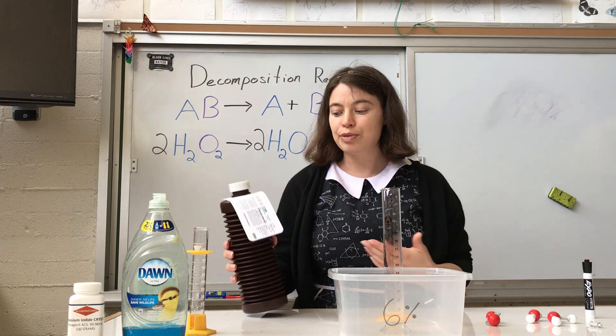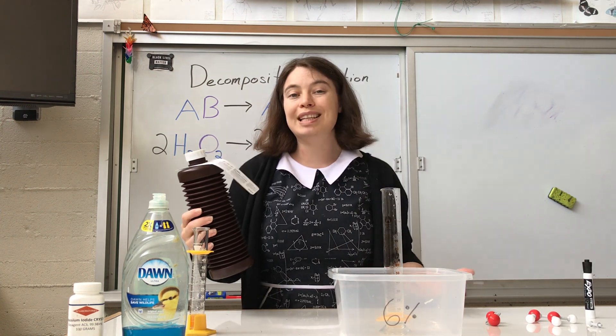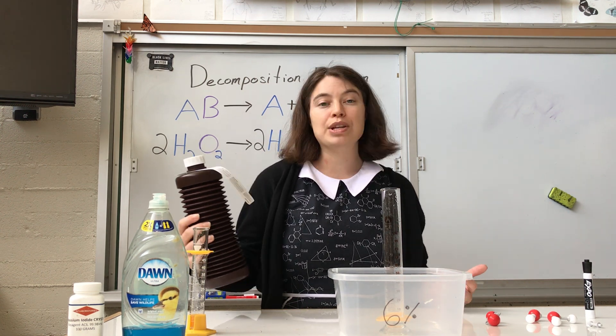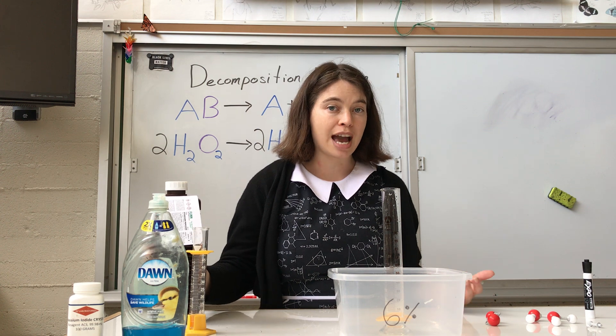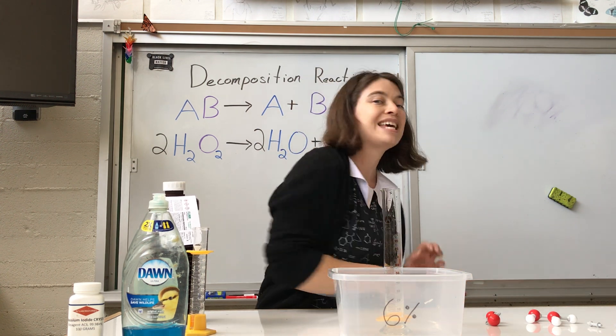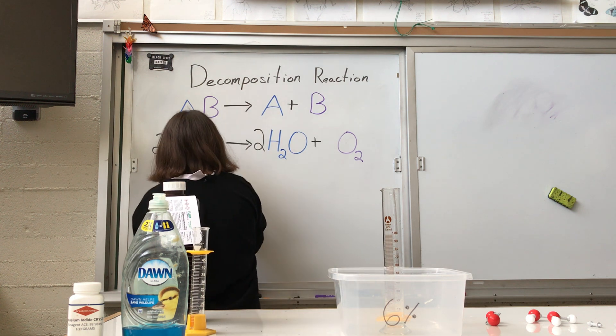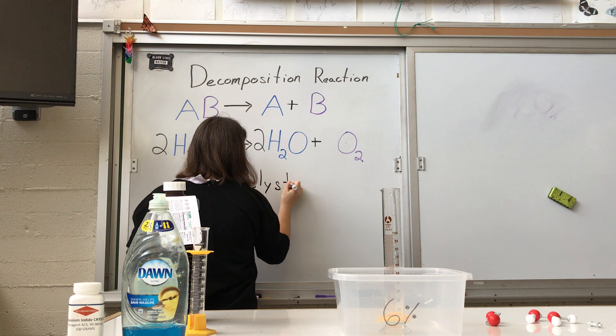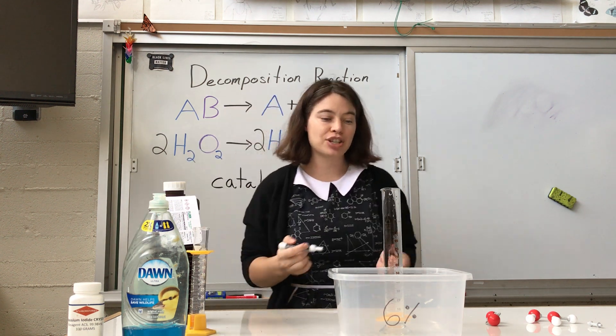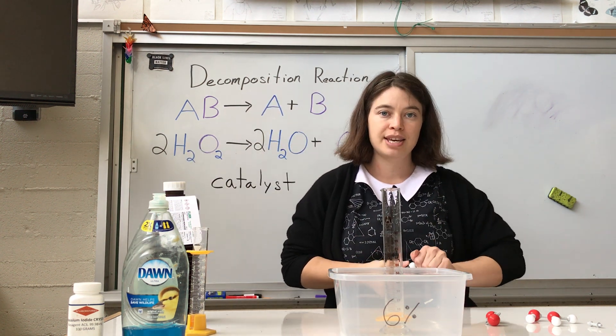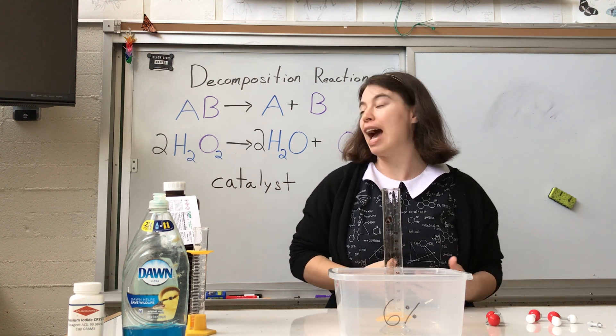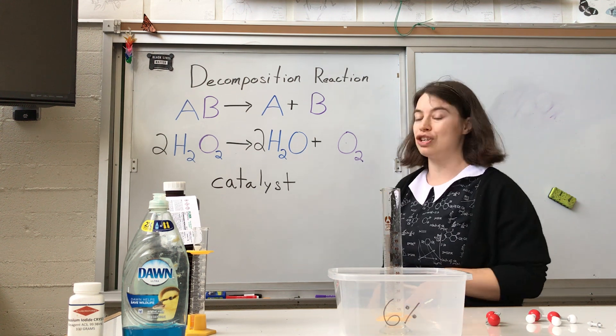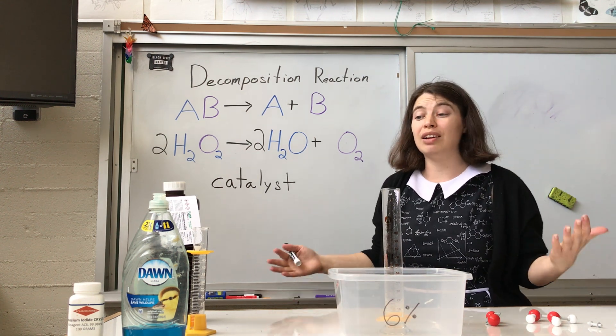Now, as I said, this reaction is already occurring, but I want to really speed it up. I want to make this reaction happen much faster. And in chemistry, when you want to speed up a chemical reaction, you can use something called a catalyst. A catalyst is just something that makes a chemical reaction happen faster. Your catalyst isn't part of the reaction. I don't put it with my reactants. I don't put it with my products. I don't write it in the equation. It just makes it go a lot faster.